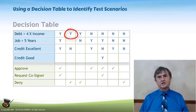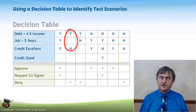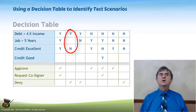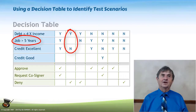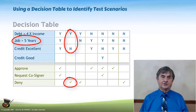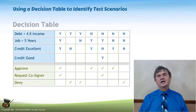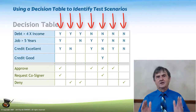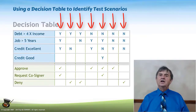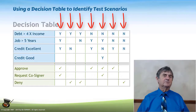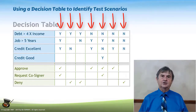If the debt is greater than four times the income but your credit is not excellent, we don't care if you've been on the job for more than five years — if your credit is not excellent, we're going to deny the request. We're not trying to get into a discussion about how good these rules are. All we are saying is these seven combinations of conditions each represent a legitimate potential set of conditions that is going to lead to some kind of an action.